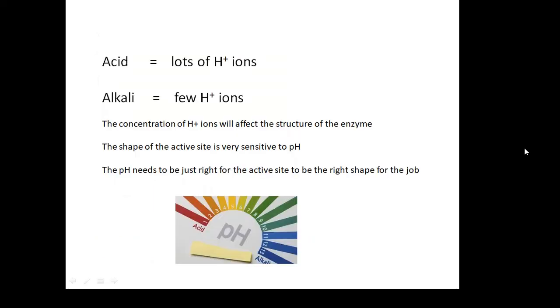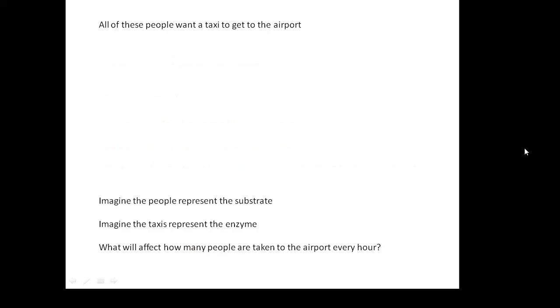An acid means there's lots of H plus ions. An alkali means there's not very many H plus ions. And it's the concentration of these H plus ions, basically protons, which will affect the structure of the enzyme. We've said that the enzyme is held together, these alpha helix and beta pleated sheets are held together by hydrogen bonds. And they are very sensitive to the concentration of hydrogen ions. Therefore, it's very sensitive to pH.